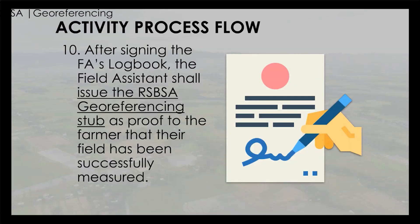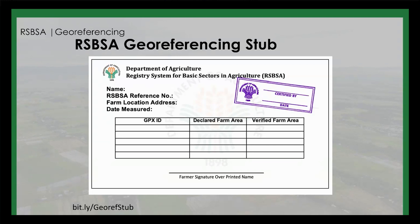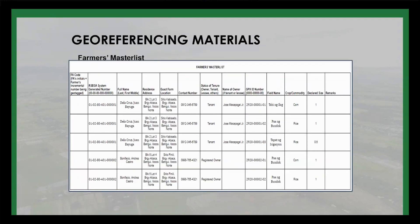See the sample logbook of the field assistant or the geo-taggers. Activity number ten: after signing the FAA's logbook, the field assistant shall issue the RSBSA geo-referencing stub as proof to the farmer that their field has been successfully measured. Here are the geo-referencing materials.